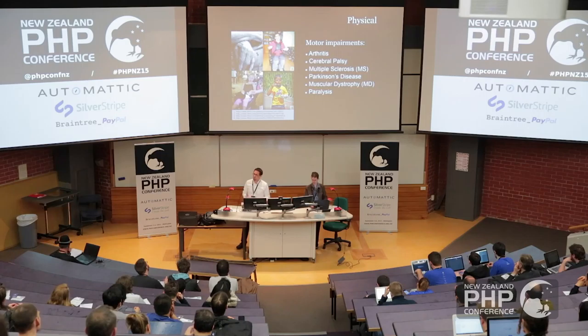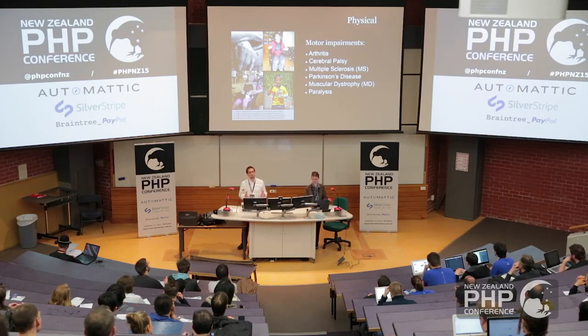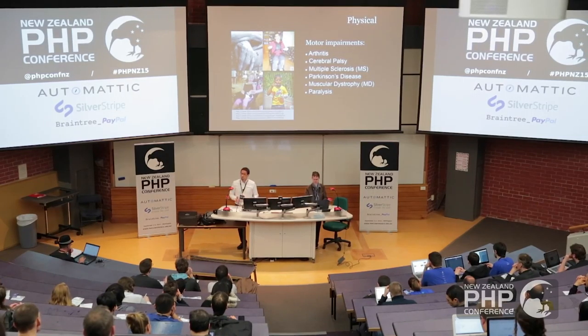Then we move into the physical impairment area — a broad range here. A subset that really affects people's ability to use the web is motor impairments: the inability to interact with a computer in conventional ways, basically using a mouse or a keyboard. People with arthritis, cerebral palsy, MS, Parkinson's, and various types of paralysis will face barriers when interacting with typical computer technology, so they use additional devices and forms of input to surpass those barriers.